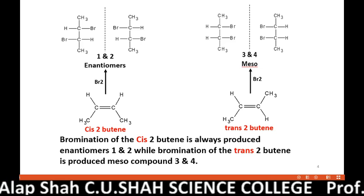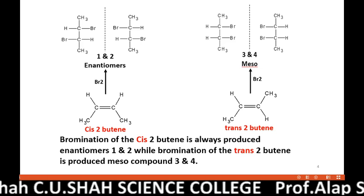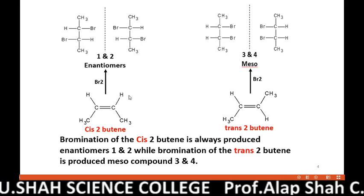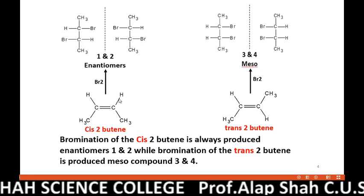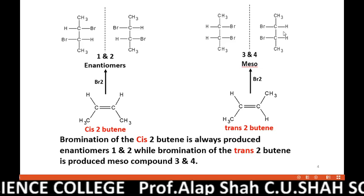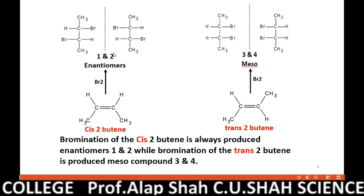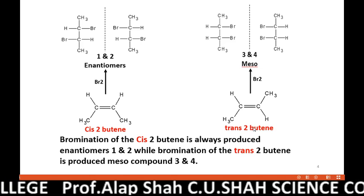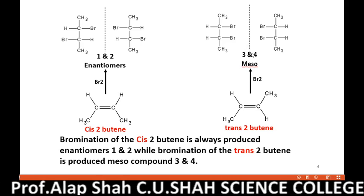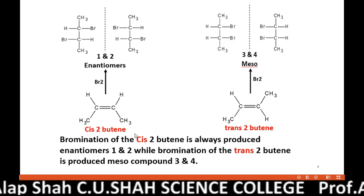In the last video we discussed stereospecific and stereoselective reactions. Whenever we carry out bromination of 2-butene, it turns into 2,3-dibromobutane and four isomers are possible. cis-2-butene always produces a pair of enantiomers, while trans-2-butene on bromination always produces a meso compound. These products you have to remember as we discuss bromination of cis-2-butene and trans-2-butene.